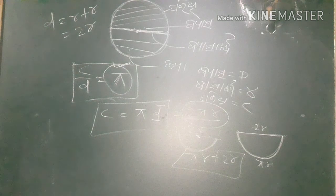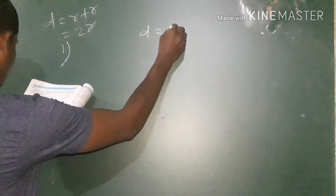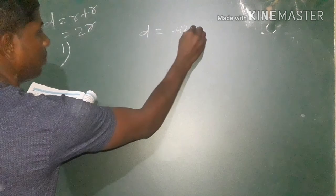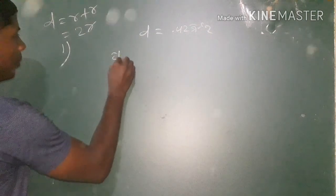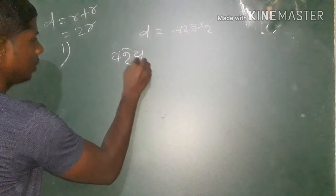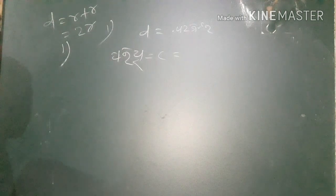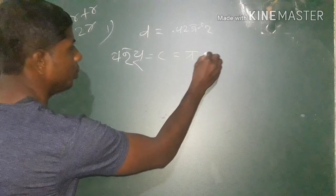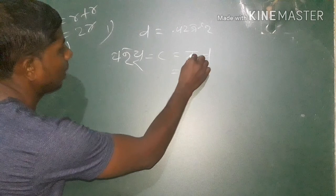Thank you. Now I have one more question. This is the first question. So this is 200. This is 200 meters. This is 10 meters from 4 meters.